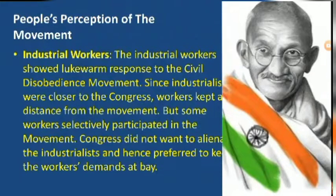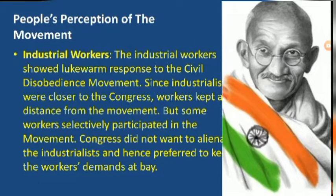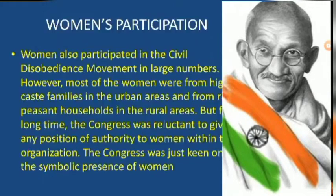Industrial workers showed lukewarm response to the Civil Disobedience Movement. Since industrialists were closer to the Congress, workers kept a distance from the movement, though some workers selectively participated. Congress did not want to alienate the industrialists and hence preferred to keep the workers' demands at bay.